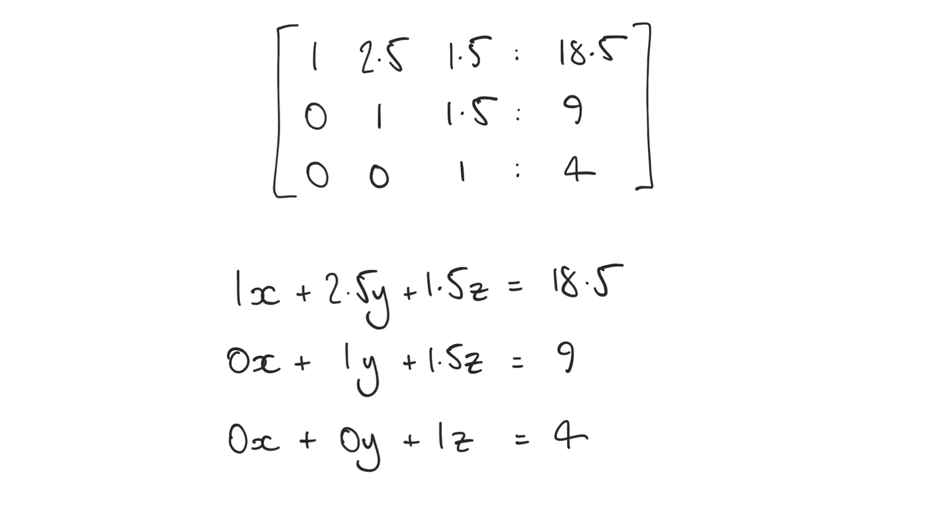And a similar idea for these other two rows here. 0x plus 1y plus 1.5z equals 9. And 0x plus 0y plus 1z equals 4. So the first thing we can do straight away is we can remove all of these 0 coefficient terms. So 0x and 0y, these disappear.